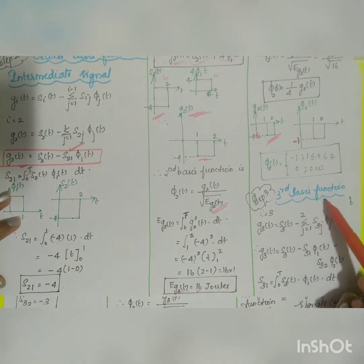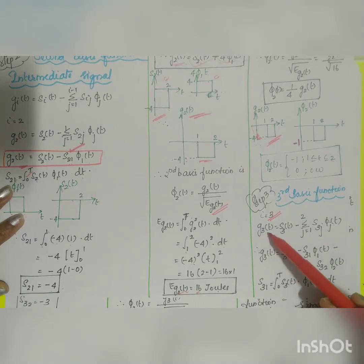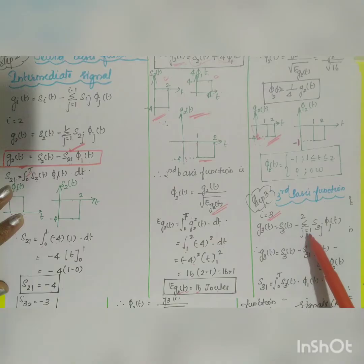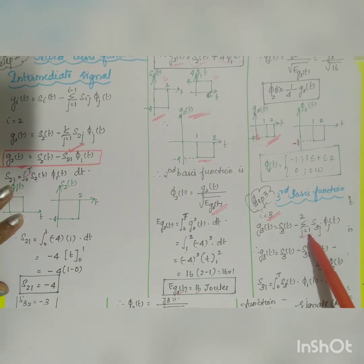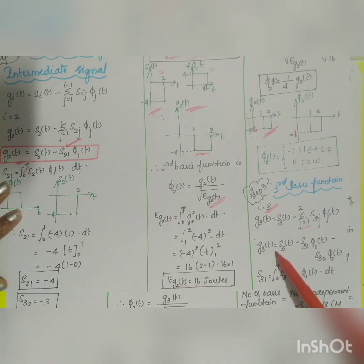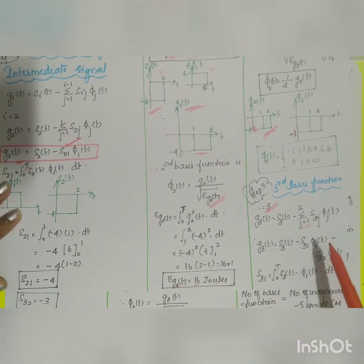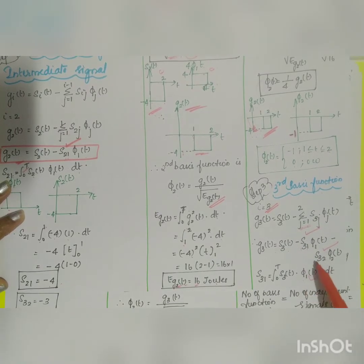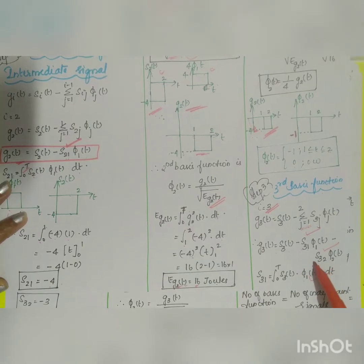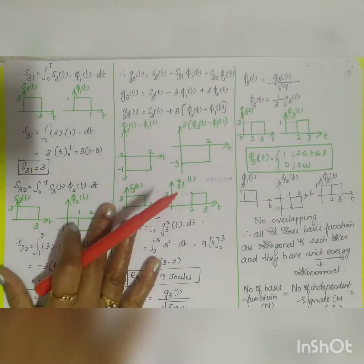To find φ3(t), set i=3 in the intermediate signal formula: g3(t) = s3(t) − s31·φ1(t) − s32·φ2(t). We need two coefficients: s31 = ∫₀ᵀ s3(t)·φ1(t) dt and s32 = ∫₀ᵀ s3(t)·φ2(t) dt.